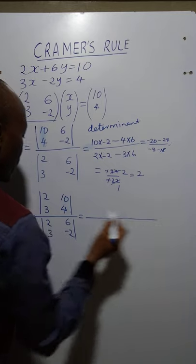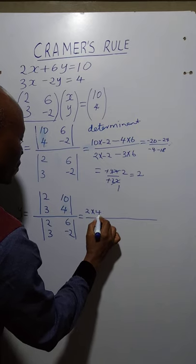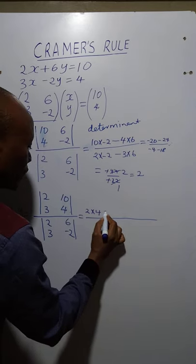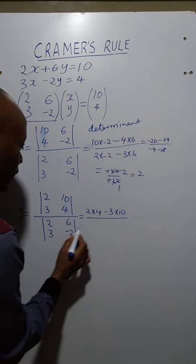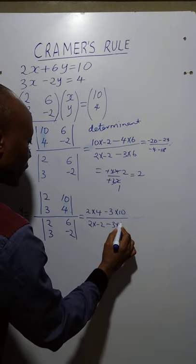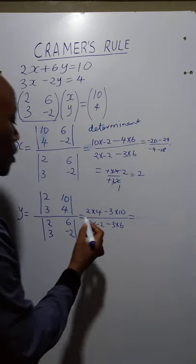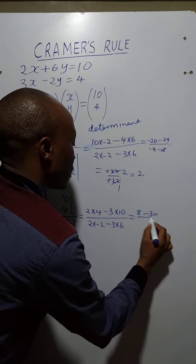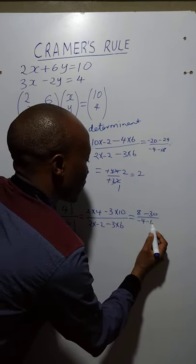The answer will be: the product of the elements in the primary diagonal, which is 2 times 4, minus the product of elements in the secondary diagonal, which is 3 times 10. On the denominator side we have 2 times negative 2, minus 3 times 6. You realize that the denominator does not change in either case. So we have 8 minus 30, over negative 4 minus 18.